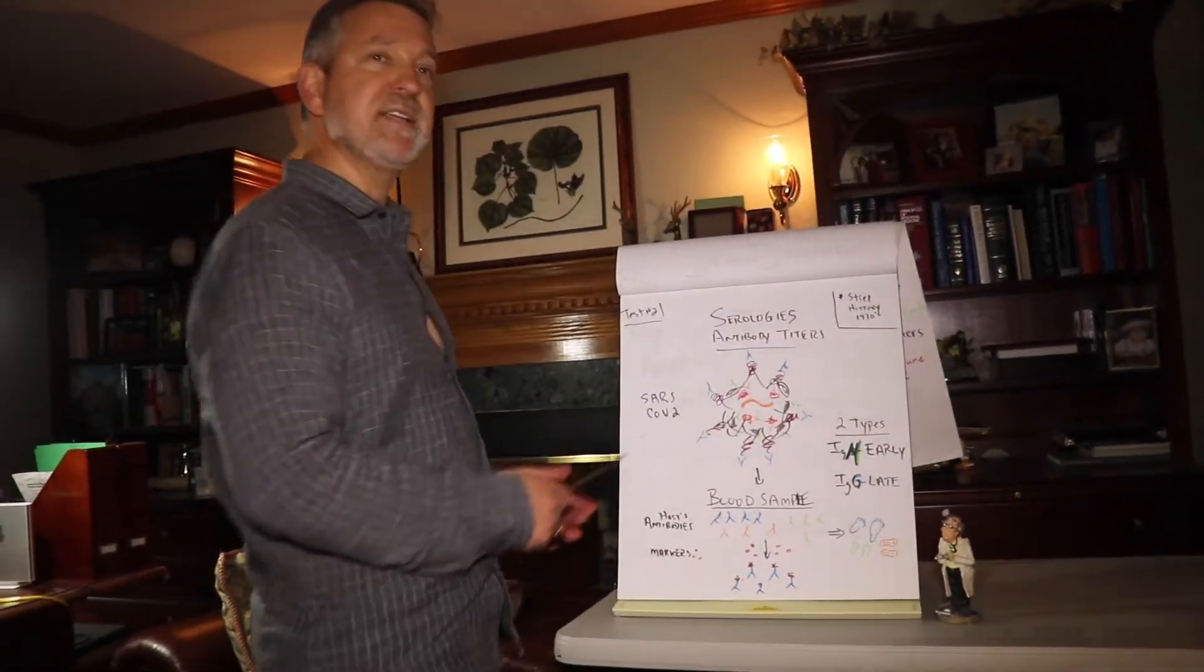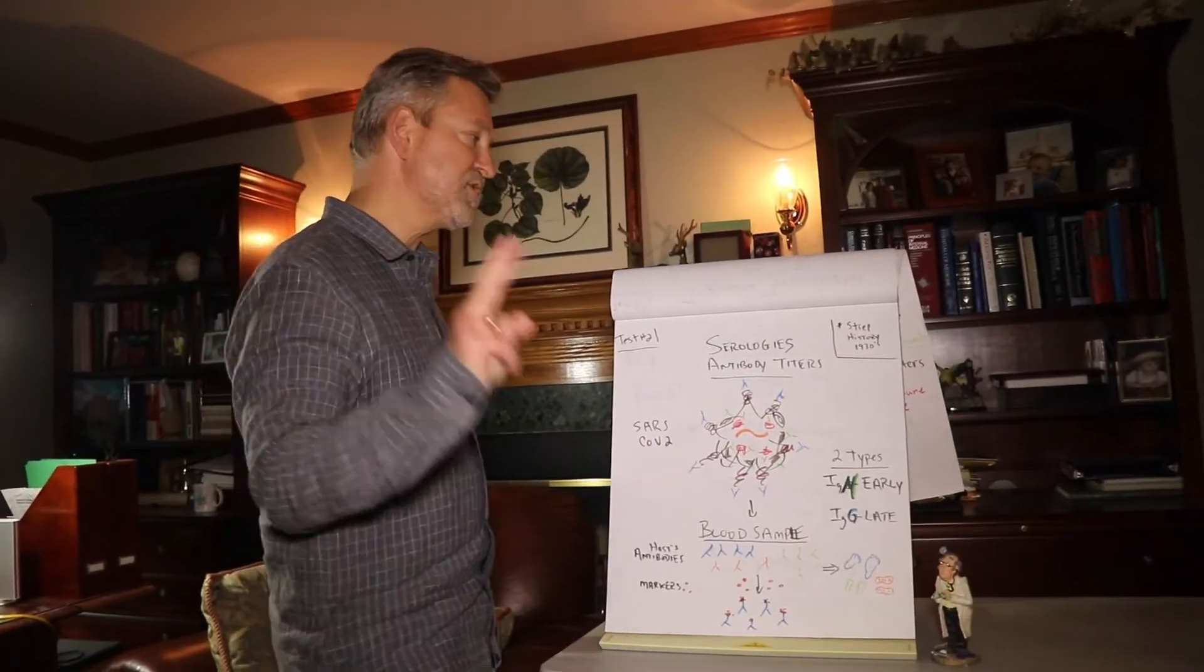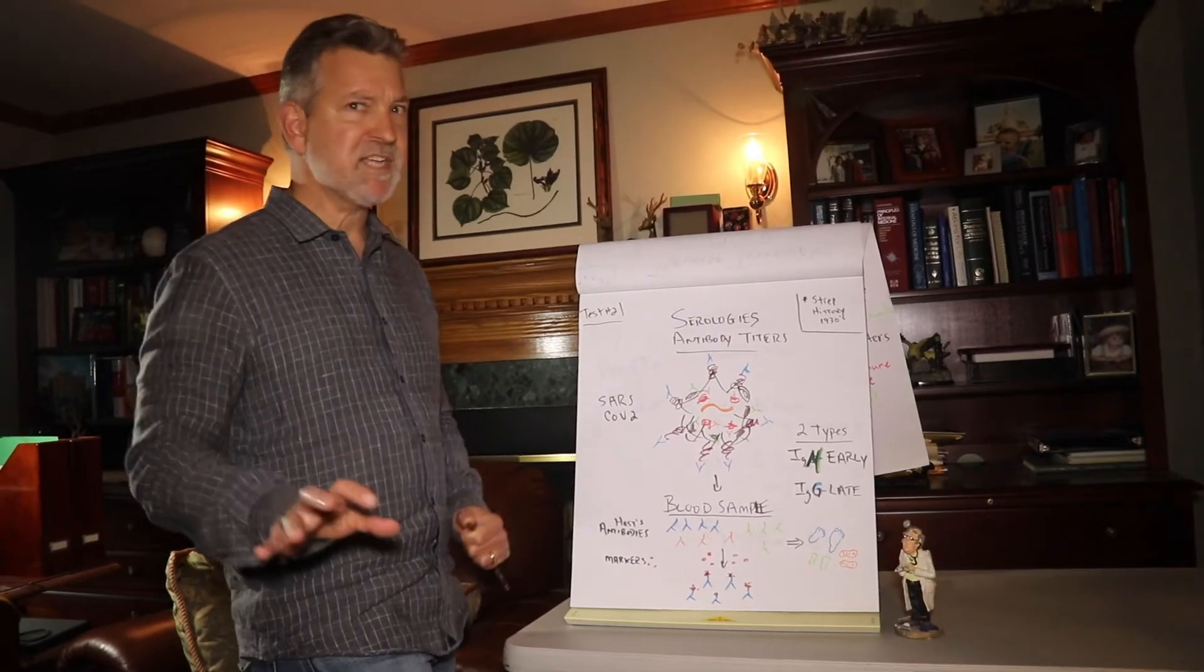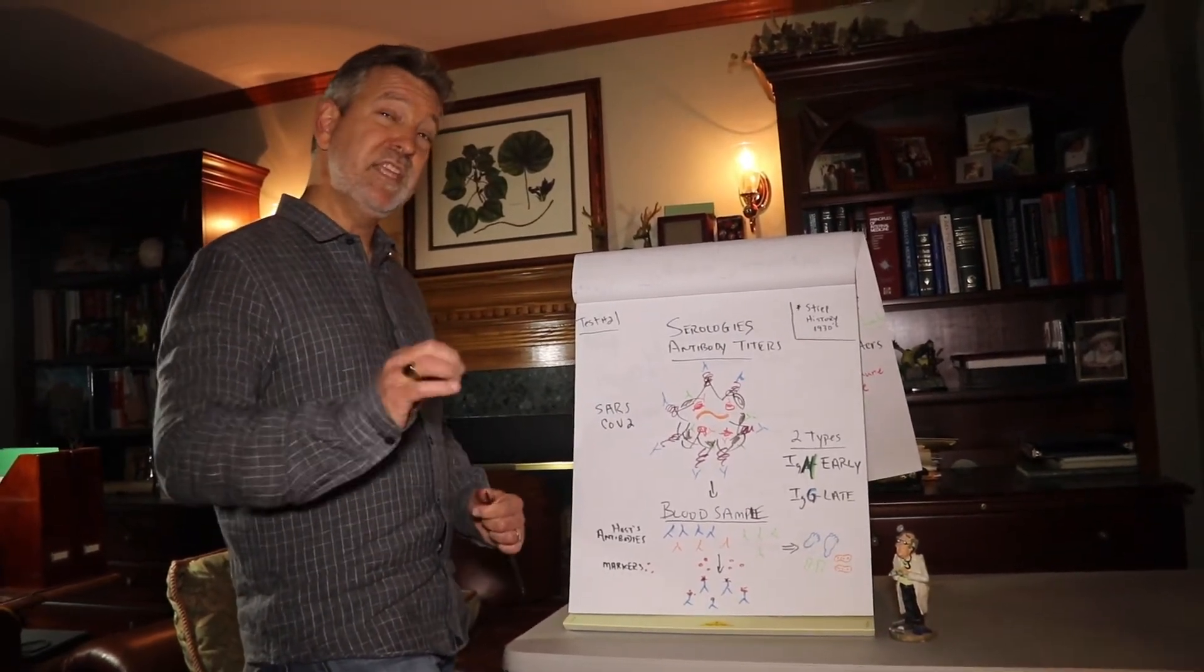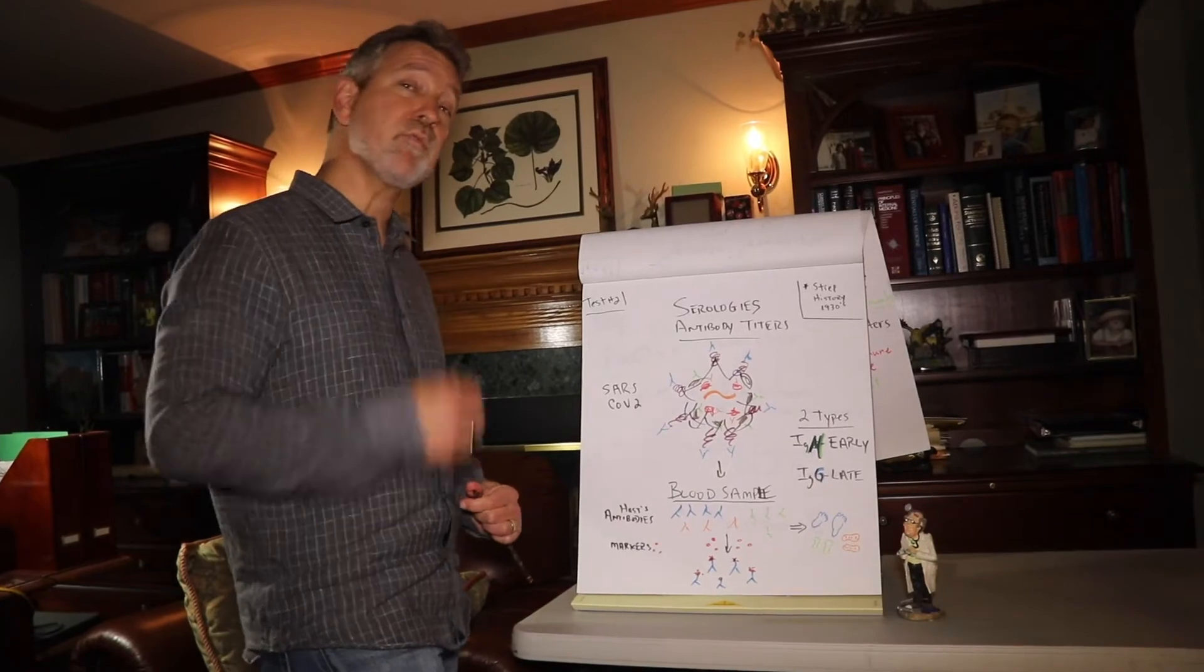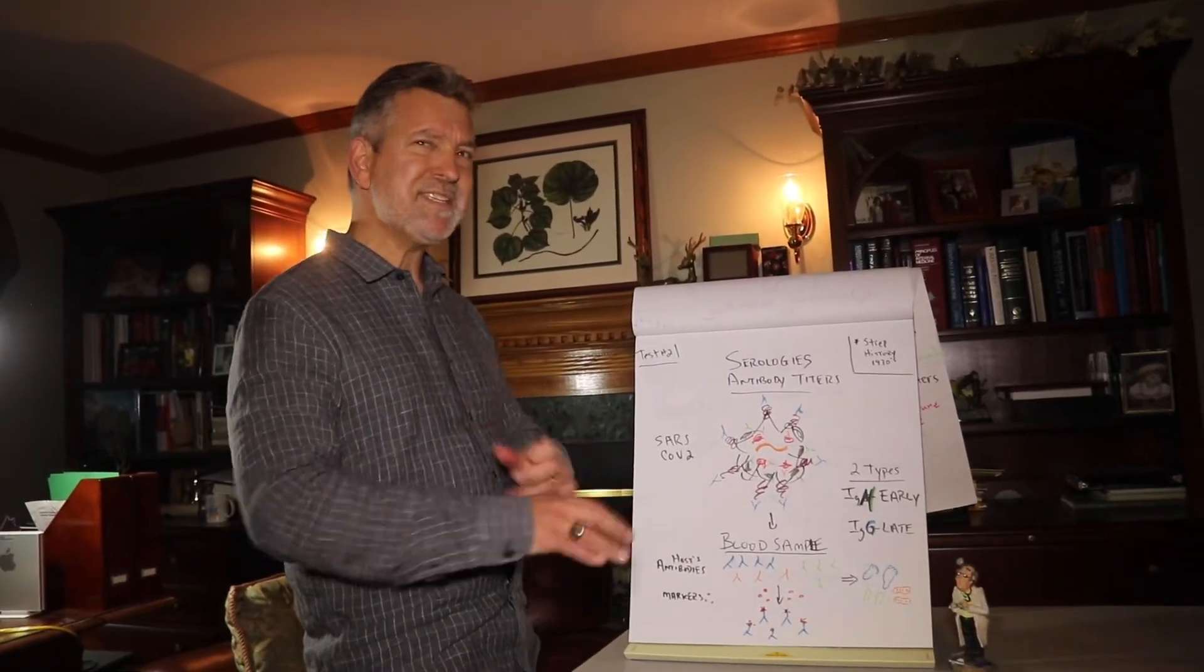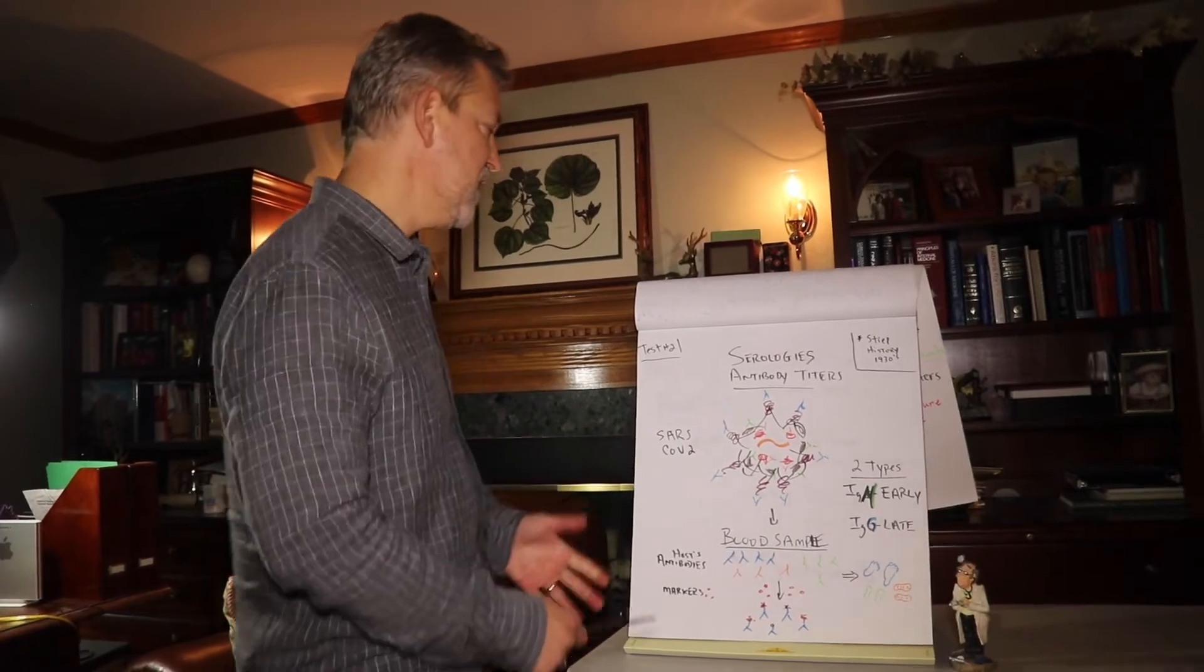All right. The next test, number two, that's the serologies, where we measure our body's immune response, the antibodies. Now, these tests have been done for a long time. In the early 1930s, these were used against strep, the one in your throat, that caused things like rheumatic fever and scarlet fever. So, this is not new. We've been doing this for a long time.